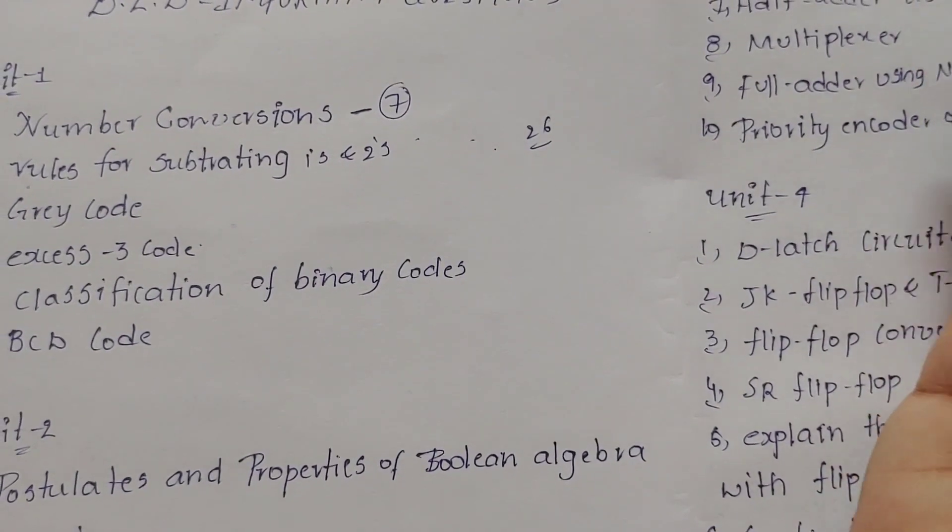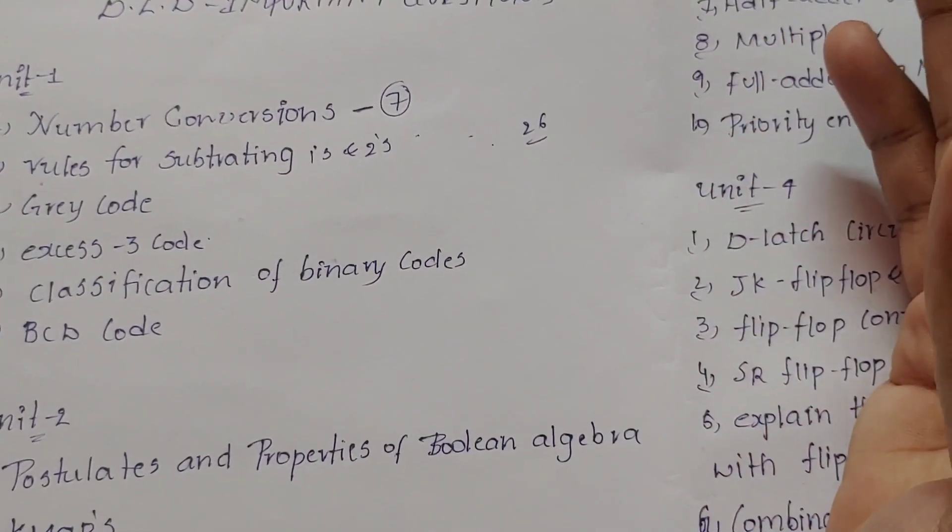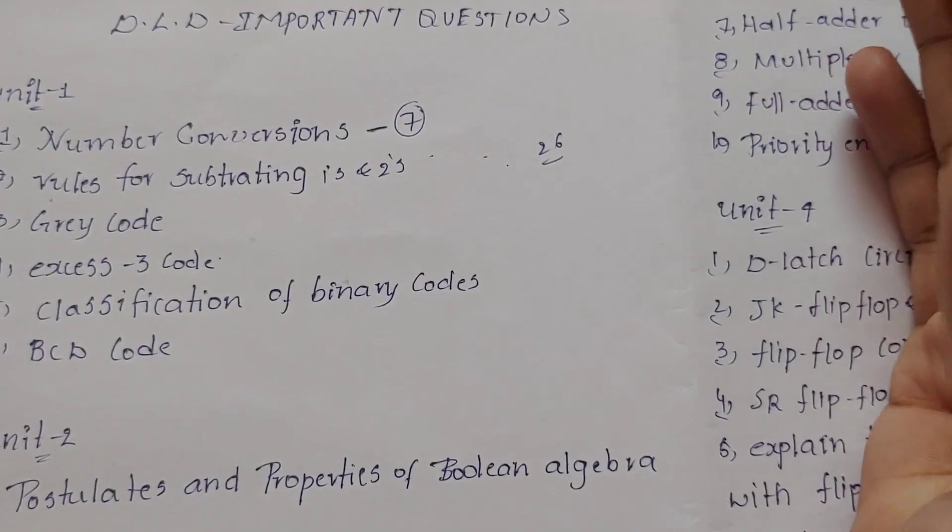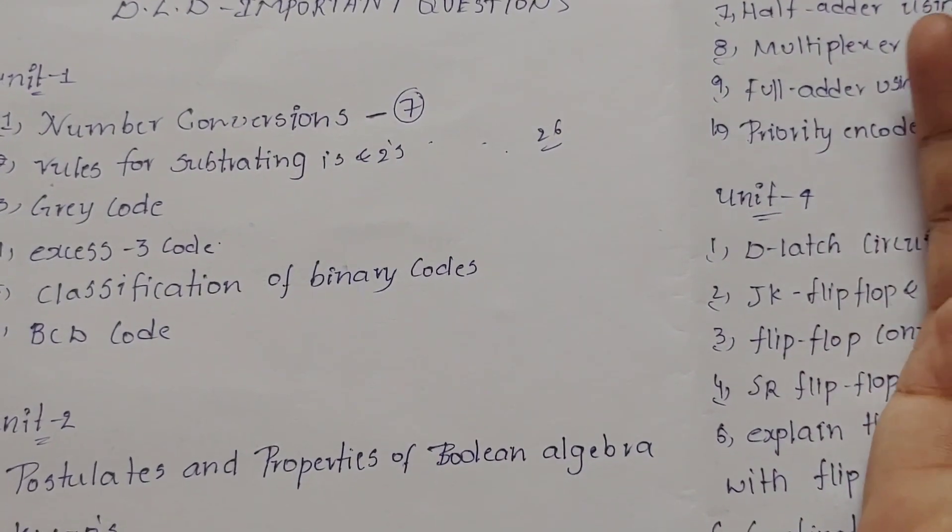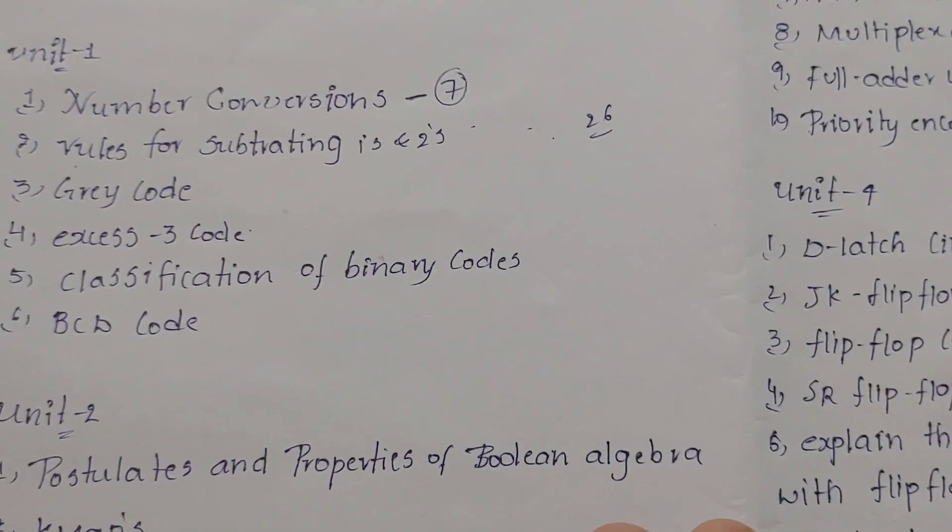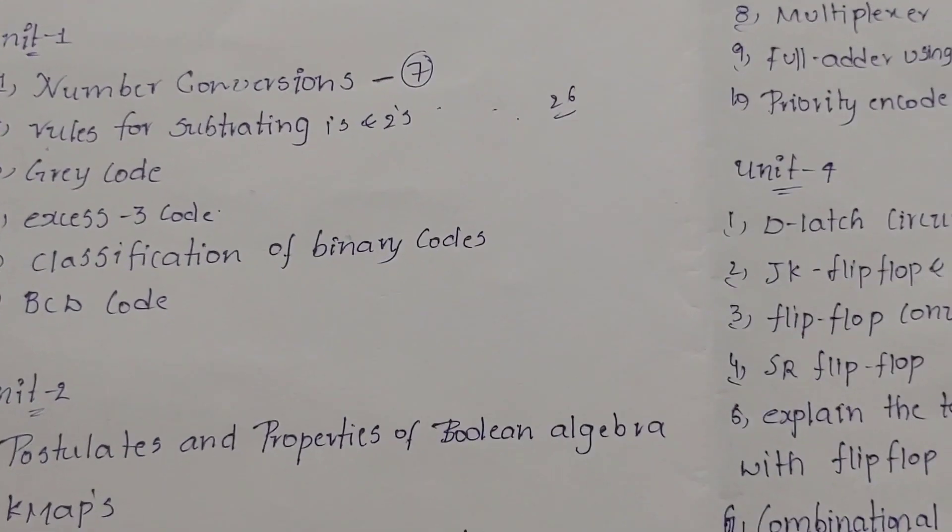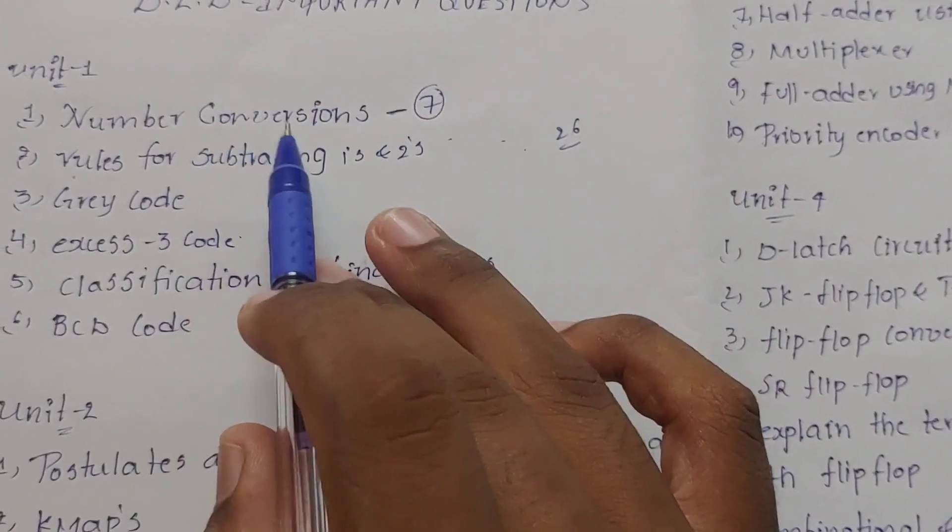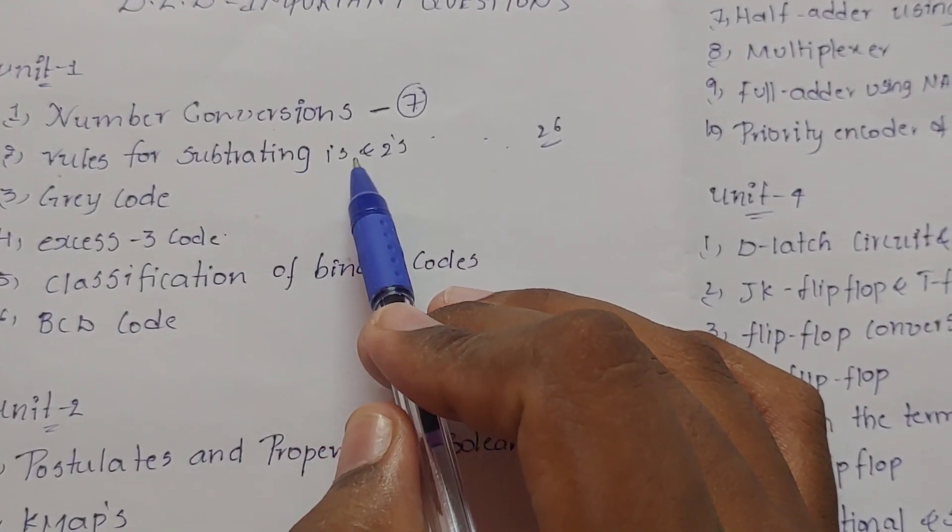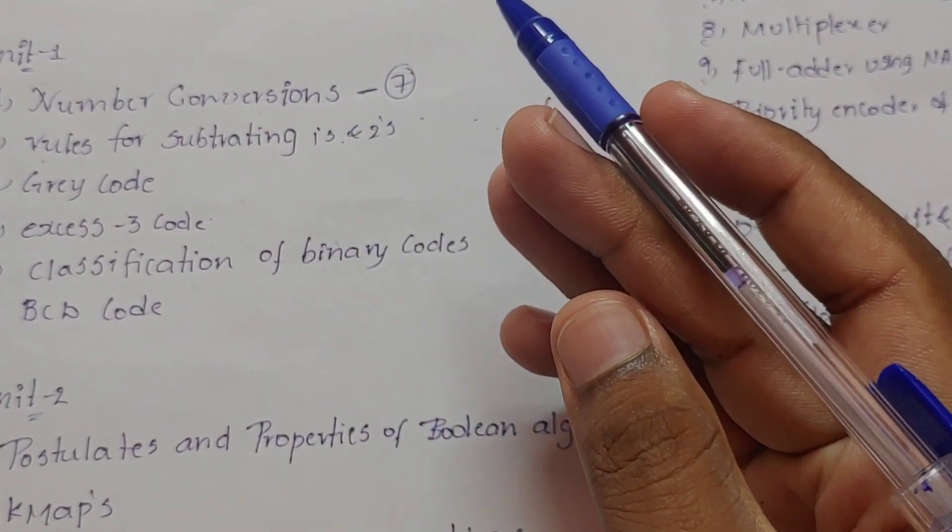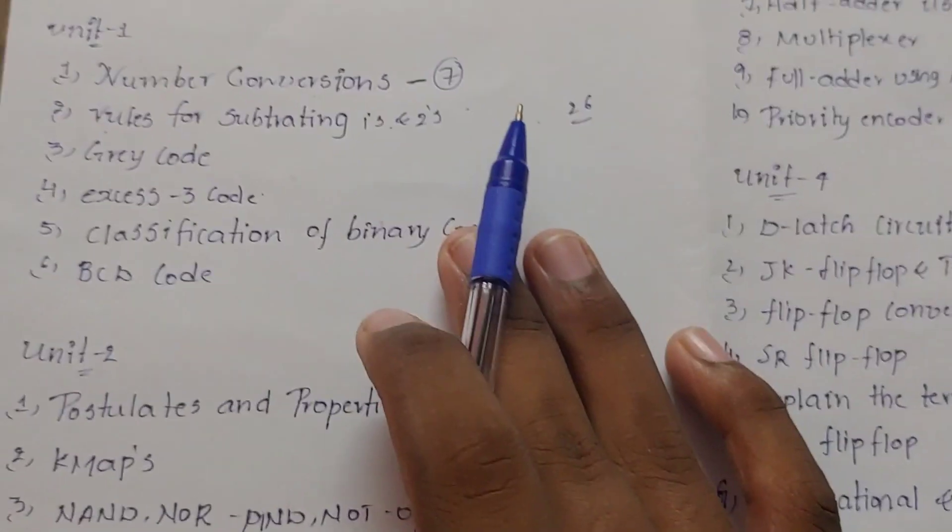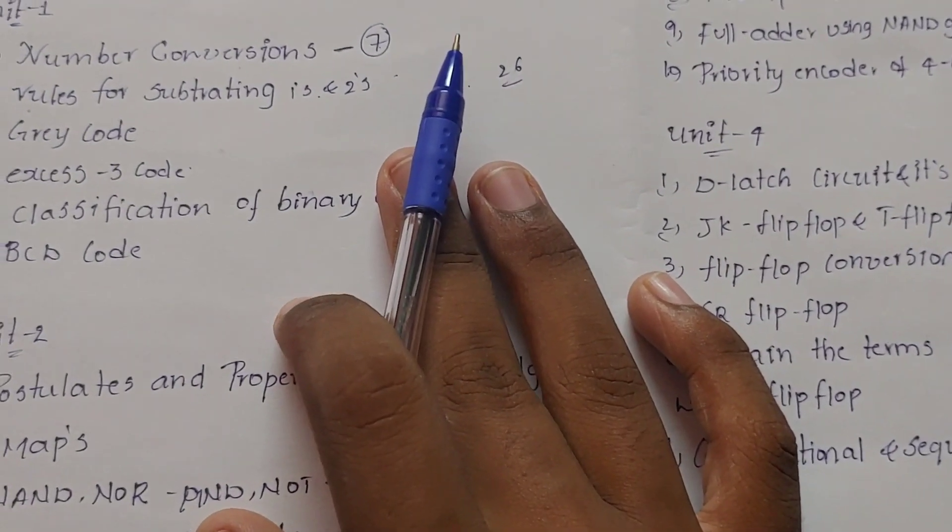Pass mark is 26. Whether you get 30 or 35 or 40, just focus on clearing 26 or 27. In unit one, number conversions are compulsory. Subtraction ones complement, twos complement, excess-3, circuit diagrams - you need to represent all these. If unit one, you can watch the second day or whenever.